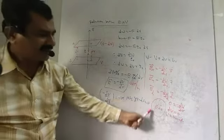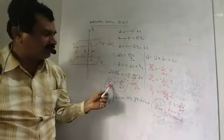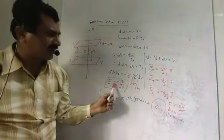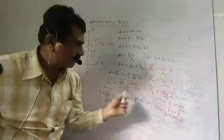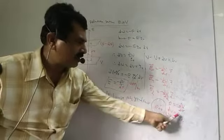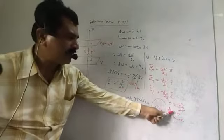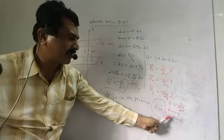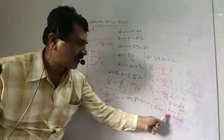Inside a conductor, the electric field is zero: E equals 0 inside the conductor. Therefore, 0 equals minus dV by dr, which means dV equals 0.